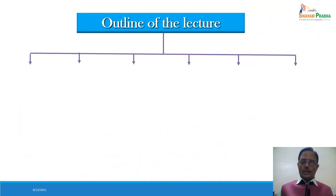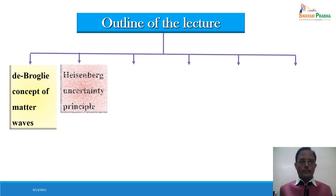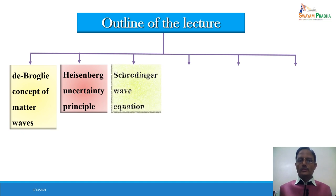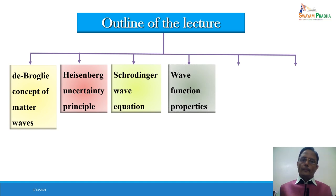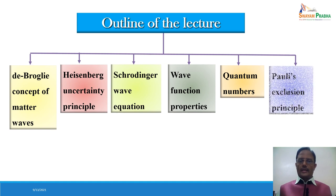The outline of this particular lecture involves topics like the de Broglie concept of matter waves, Heisenberg uncertainty principle, Schrödinger wave equation, properties of the wave function, quantum numbers, and at the end we will be discussing Pauli's exclusion principle.